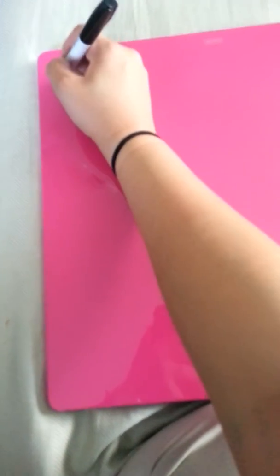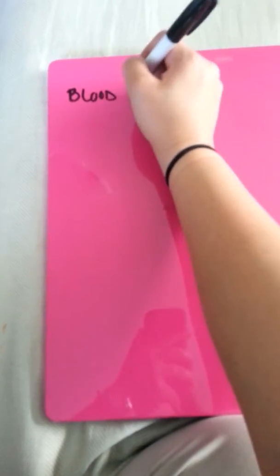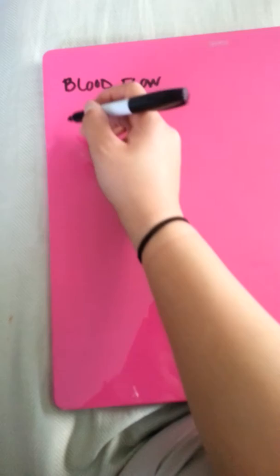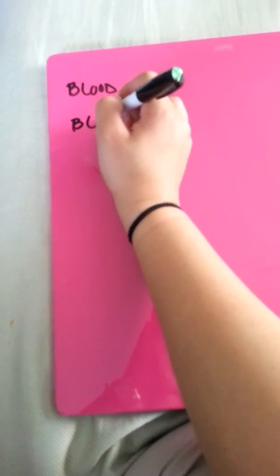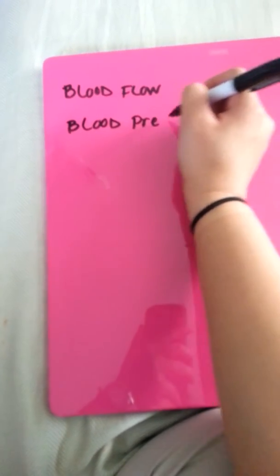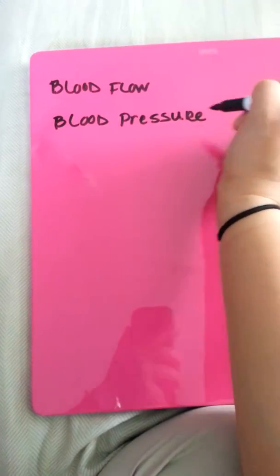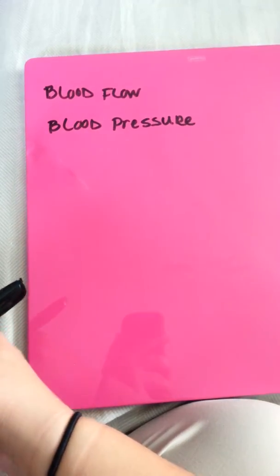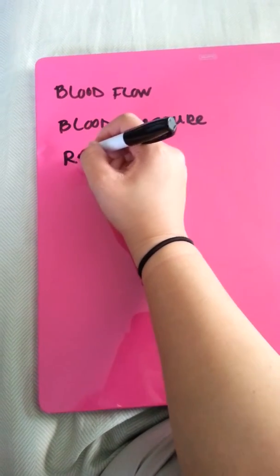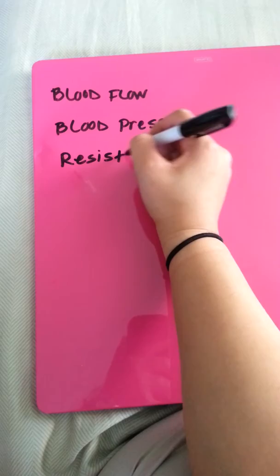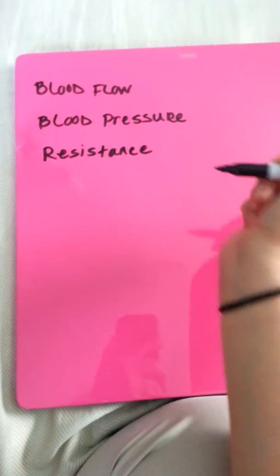This is how I study blood flow and blood pressure. Physiology of circulation, definition of terms. We're going to look at blood flow, blood pressure, and resistance. Let's start with these three.